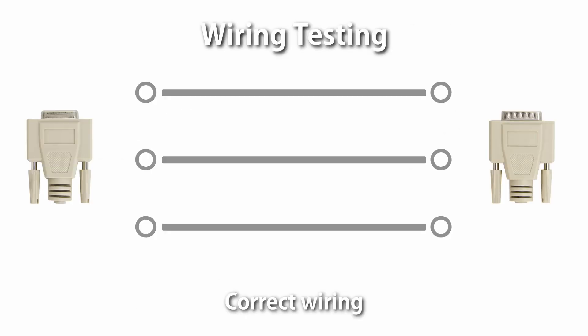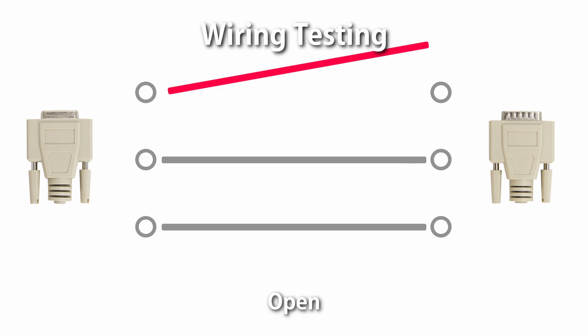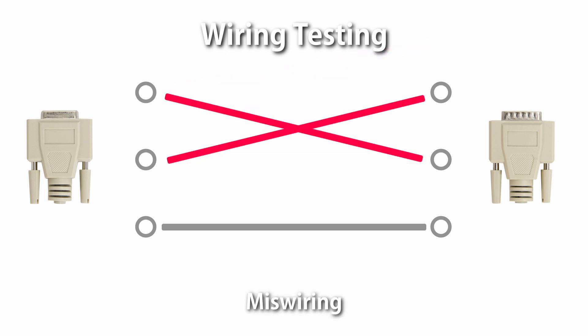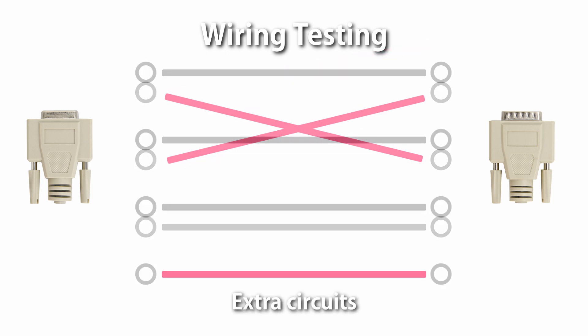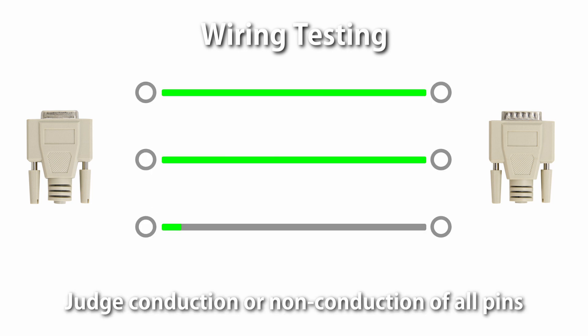Wiring testing is the most basic of the five. It determines if the wiring is correct by testing for short, open, miswiring, and extra circuits. The tester judges the conduction or non-conduction of all testing terminals by the resistance value.